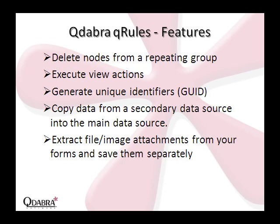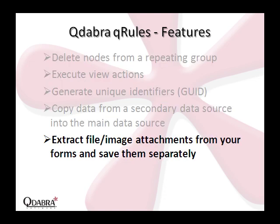Here are some examples of the operations that QRules supports: delete one or more nodes from a repeating group; execute view actions such as inserting rows into a repeating group; set a field value to a unique identifier in a format that you specify; copy data from a secondary data source into a repeating group in your main data source; save a file or an image attachment in your form to a separate document type in order to minimize the size of your form.